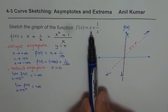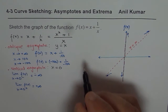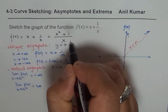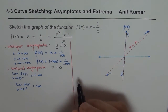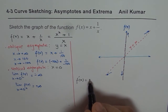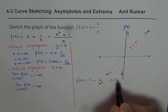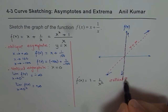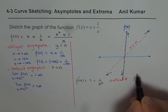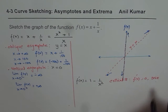Now let us find the derivative of the function and analyze it for local maximum or minimum. The first derivative is f'(x) = 1 - 1/x². To find critical numbers, we set f'(x) = 0 or look for where it does not exist.